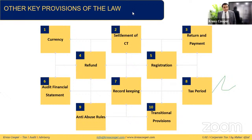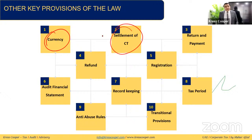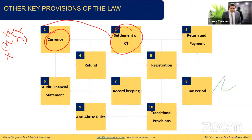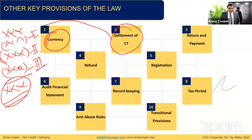Other key provisions: all amounts must be in UAE dirhams; transactions not in dirhams must be converted at the UAE central bank exchange rate. To settle corporate tax liability: withholding tax is adjusted first, then foreign tax credit, then any other applicable relief. The remaining net amount is payable to the Federal Tax Authority.